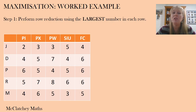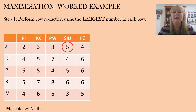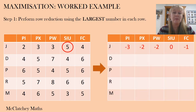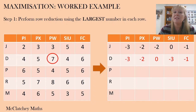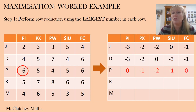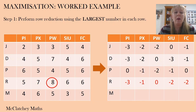Instead of taking the smallest number away from everything in the row, for maximization I'm going to take the largest number. The largest number in Jim's first row is five, so we subtract that from all values in that row. We'll end up with either zero or negative numbers when we do this, so make sure your skills at subtracting negative numbers are on point. Moving on: Dwight's largest number is seven, Pam's is six — there are two sixes so we'll get two zeros — Ryan's largest is eight, and Michael's largest is six.